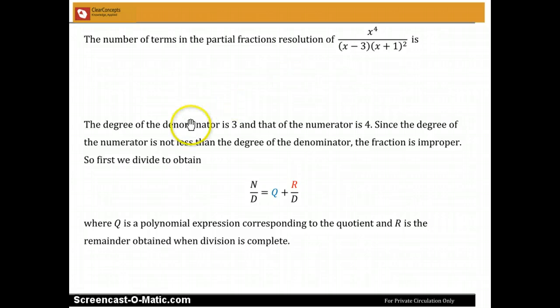The first thing we recognize is that the degree of this denominator is 3, but that of the numerator is 4. And since the degree of the numerator is not less than the degree of the denominator, this expression is an improper fraction.